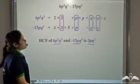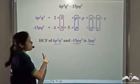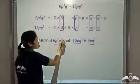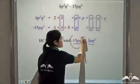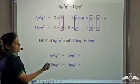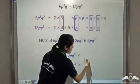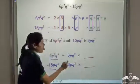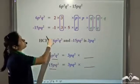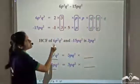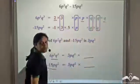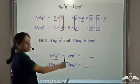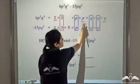So the HCF of 6p²q³ and −15pq² is 3pq². This means 3pq² is a factor of both terms, so both terms can be written as 3pq² into something. The next step is to find that something. For 6p²q³: taking out 3pq², we are left with 2, p, and q — so 2pq. Therefore 6p²q³ = 3pq² × 2pq.